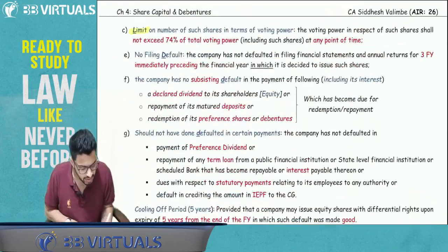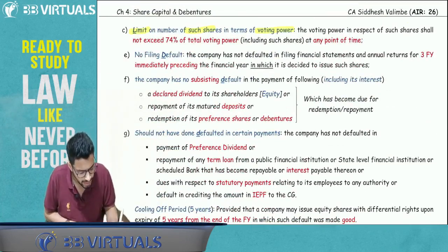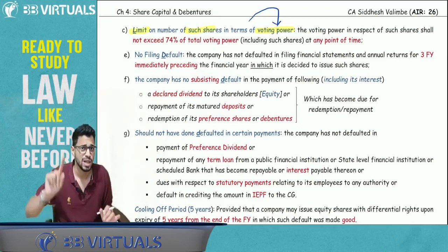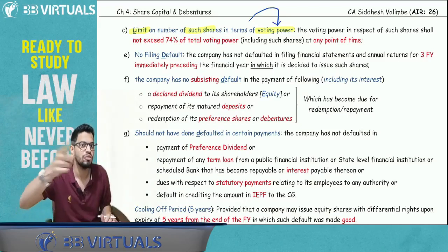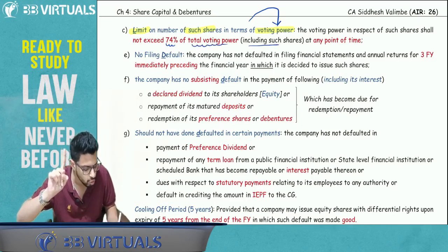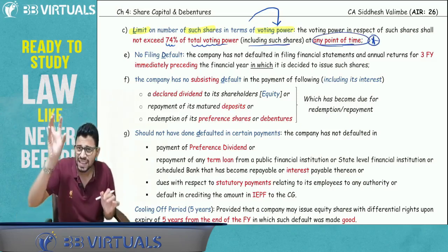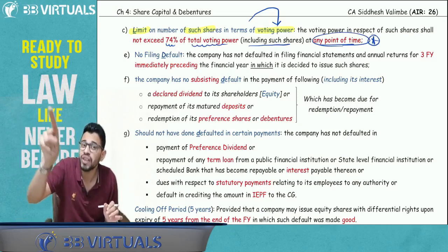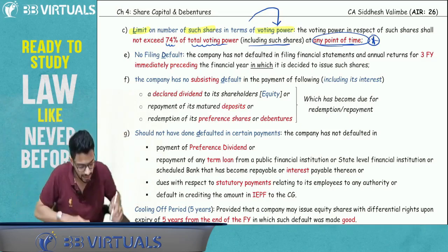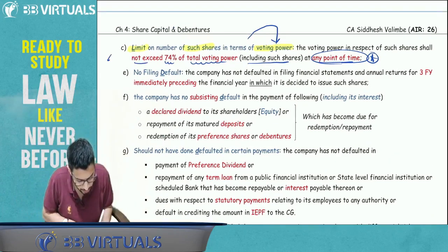Condition 3 — Limit on number of such shares: In terms of voting power, the voting rights of differential rights equity shares should not exceed 74% of total voting power including such shares at any point of time. In other words, at no point in the company's lifetime should the voting power of differential rights equity shares exceed 74% of total voting power — it must be less than or equal to 74%.